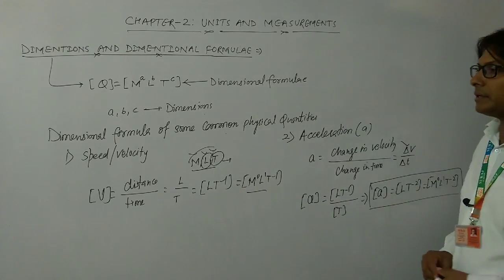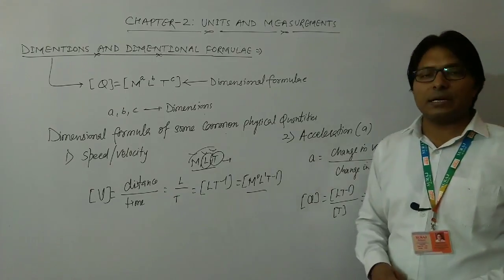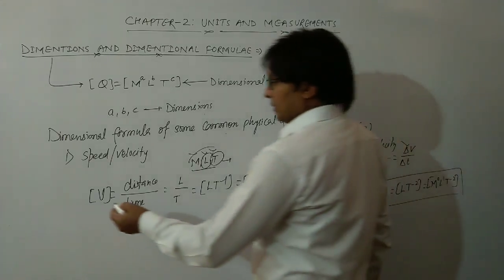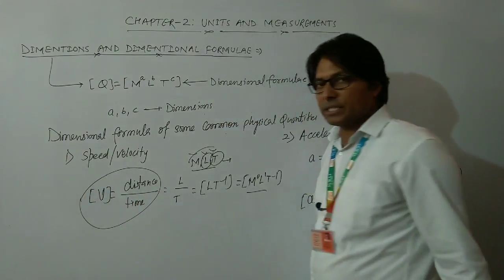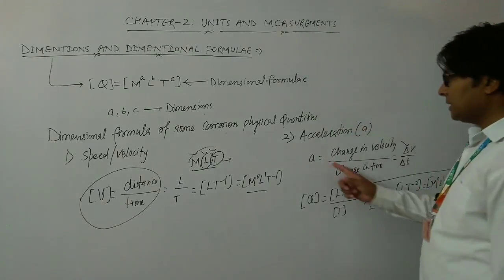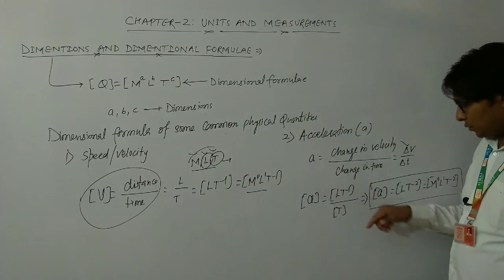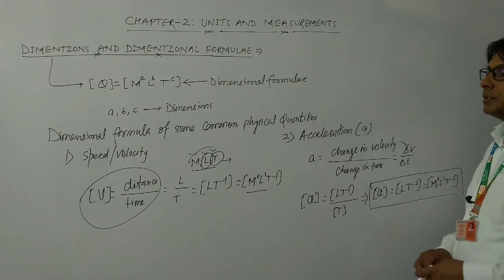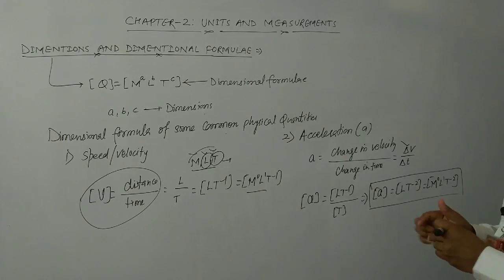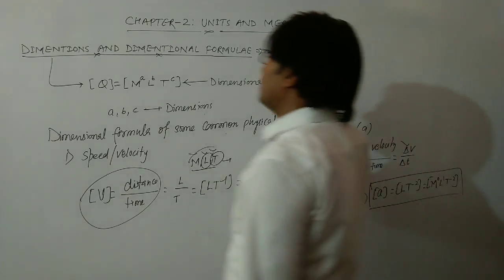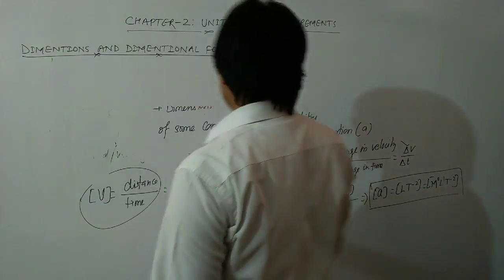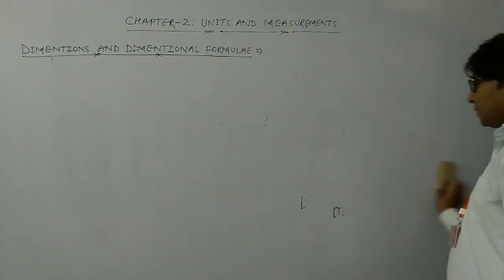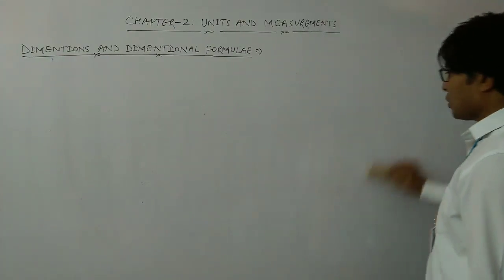One thing you can infer from here is that if you want to write the dimensional formula of any physical quantity, you first need to know the formula of that physical quantity. We know the formula of velocity is distance upon time, so we can easily write its dimensional formula. Similarly, acceleration is change in velocity per unit time, so we can write its dimensional formula. In the same fashion, you can write the dimensional formula of any physical quantity, provided you know its formula.